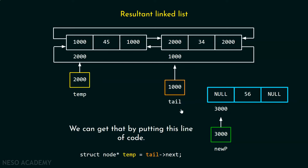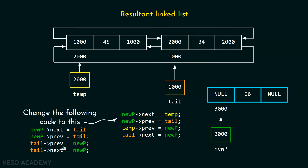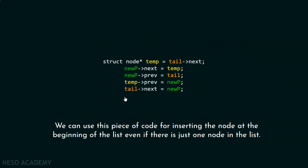We can use this temp pointer for adding this node at the beginning of the list. We should change the code so that tail is replaced by temp in the relevant lines, and the rest of the code remains the same. The next part of this node must be updated to point to the first node, the prev part must point to the last node since this is a circular doubly linked list, the prev part of the first node must be updated to point to this node, and the last node's next must be updated to point to this node. This same code works even when there is just one node in the list.